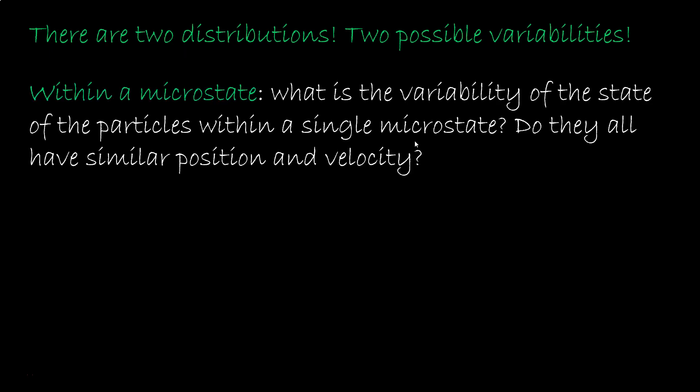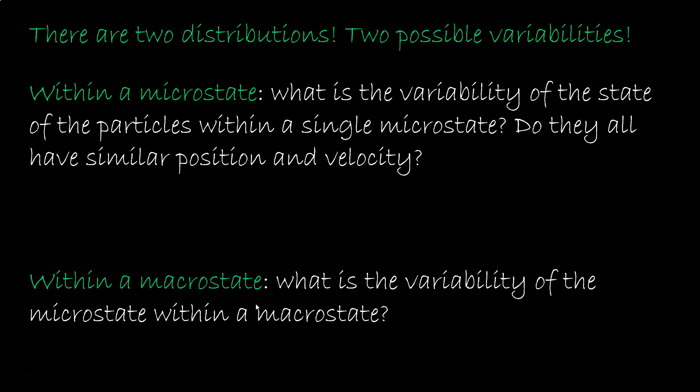The whole point here is that there are two distributions, and two possible variabilities to calculate. We could look within a microstate, look at the variability of the particles, where they are in similar states, or look at the macrostate, see whether the microstates are similar to each other. The first one leads to the Boltzmann entropy, and the second to the Gibbs entropy.